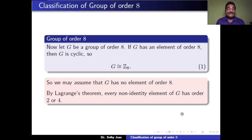If G has an element of order 8, then G is cyclic and so G is isomorphic to Z8. So we may assume that G has no element of order 8. Therefore, all non-identity elements of G have order either 2 or 4.